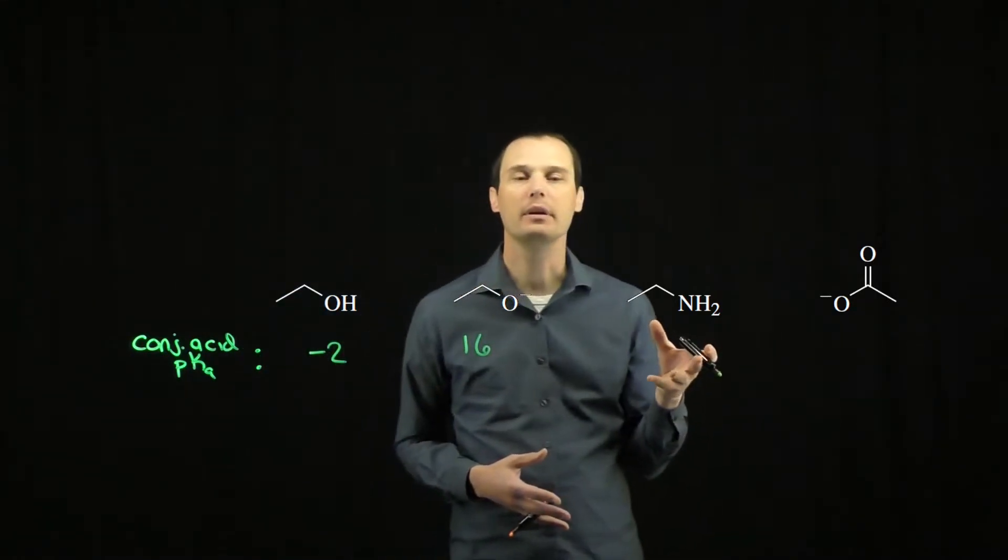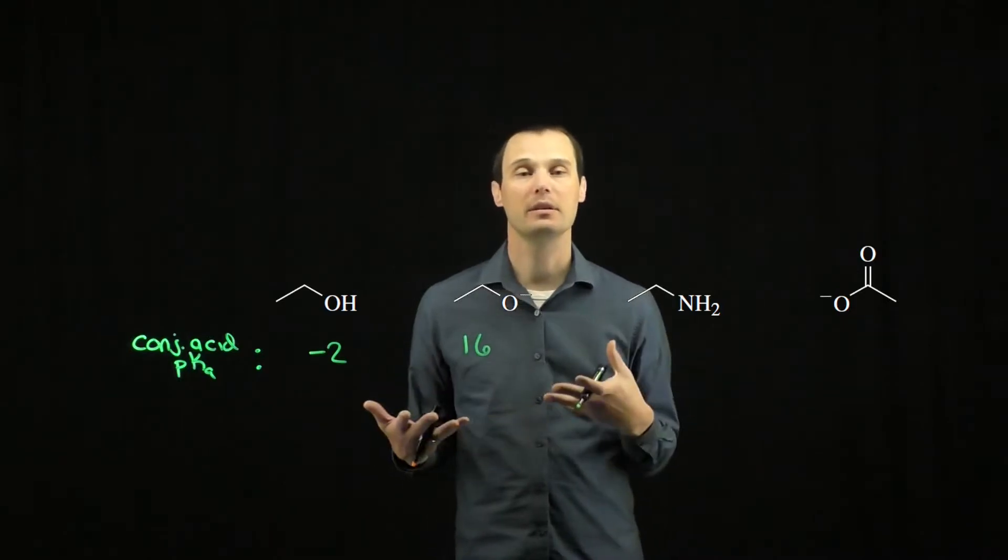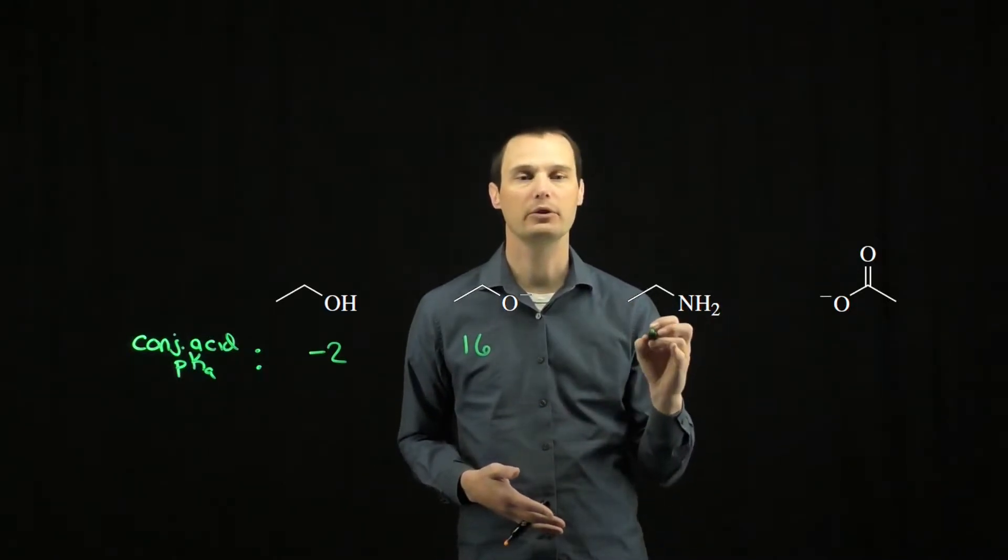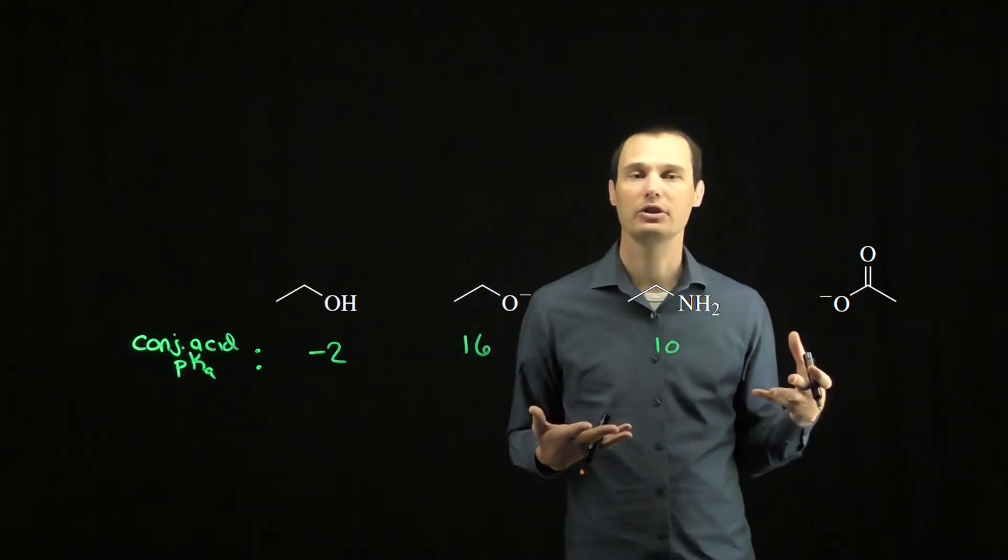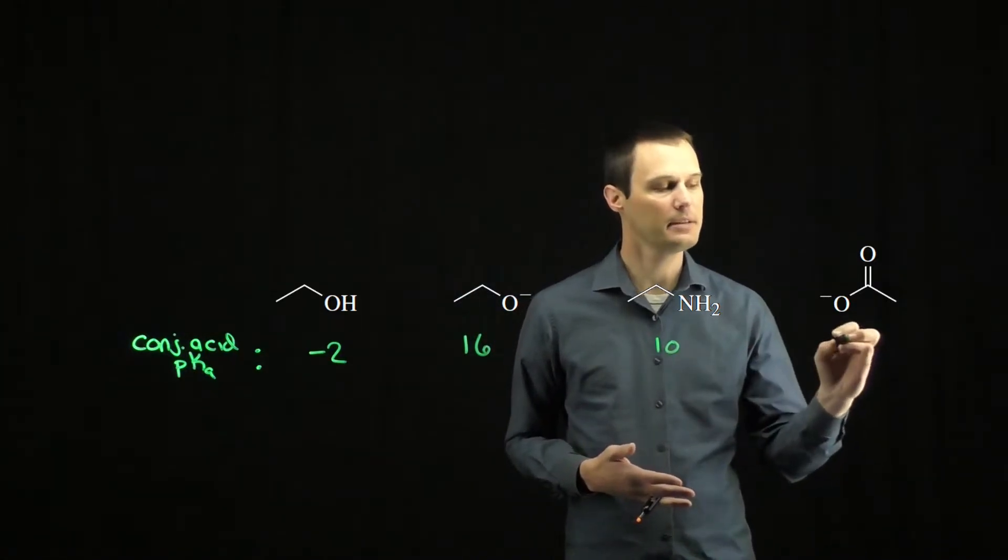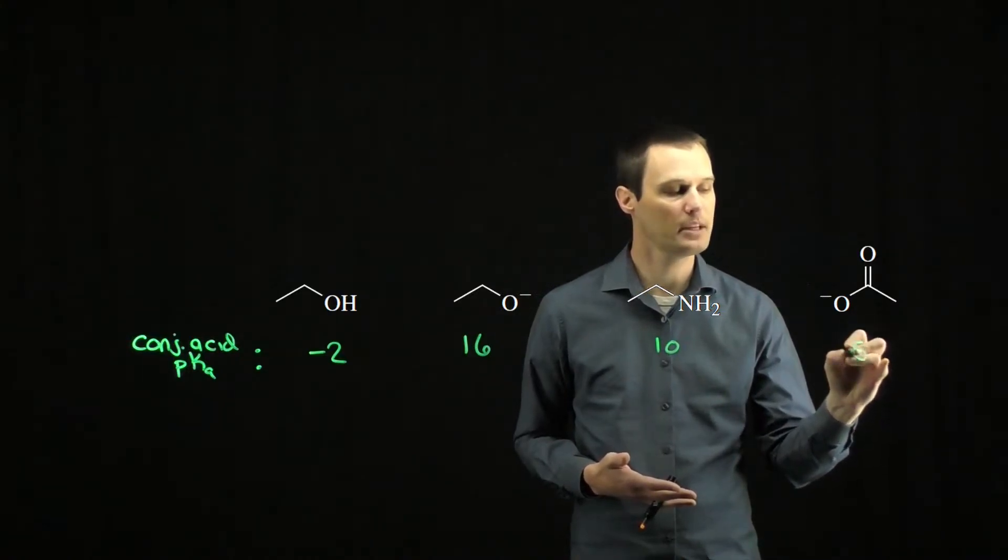The next molecule is an amine. The conjugate acid of an amine is an ammonium salt, a protonated nitrogen. That has a pKa of around 10. And our final molecule is a carboxylate. The conjugate acid of our carboxylate is a carboxylic acid. Carboxylic acids have a pKa of approximately 5.